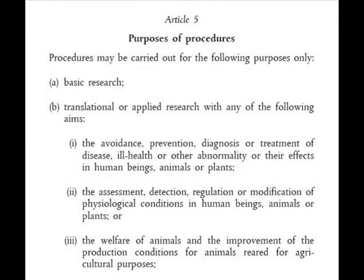Here we are at Article 5, which reads: purposes of procedures. Procedures may be carried out for the following purposes only. A: basic research — that's research that doesn't really have an aim, sometimes called blue skies research or curiosity-driven research. Basically, the animal rights community will never be able to prove that animal models are an inefficient way of improving human health because it doesn't have any aims.